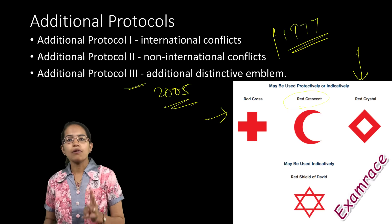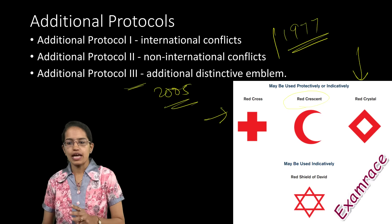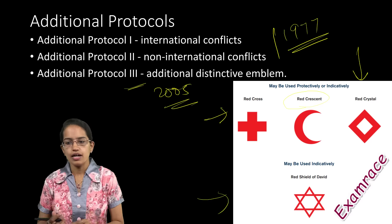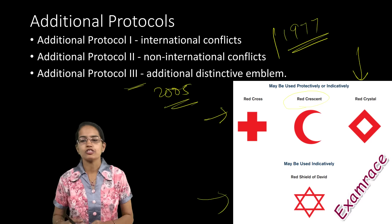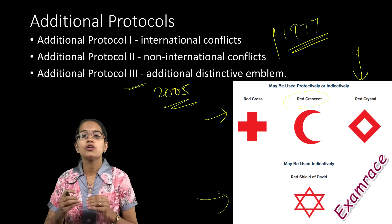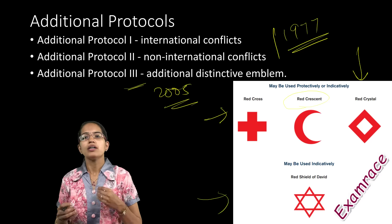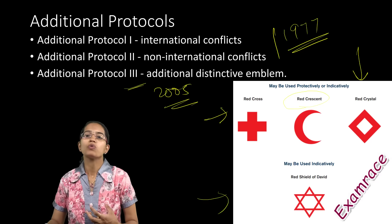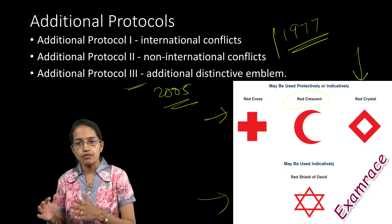These three are protective and indicative symbols. The last symbol with a star is only an indicative symbol. Either of these symbols work well and indicate a humanitarian cause to help victims of war or civilians caught during wartime.